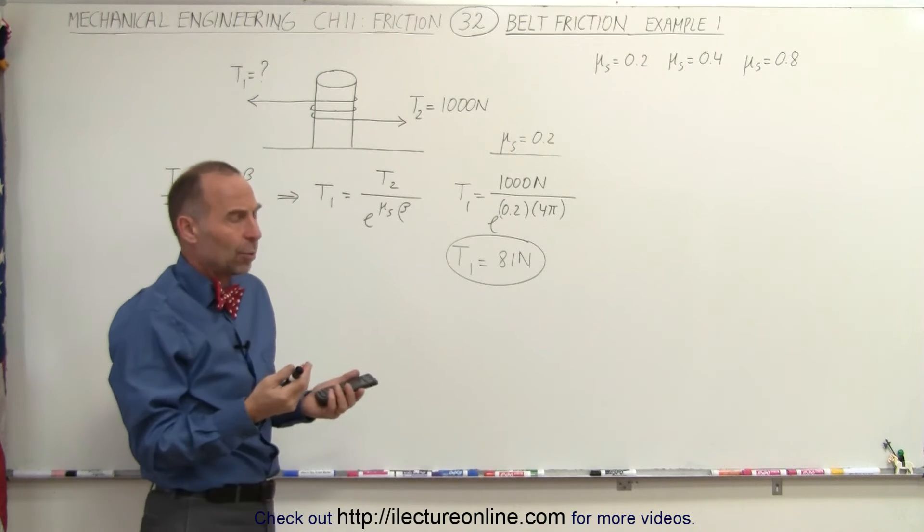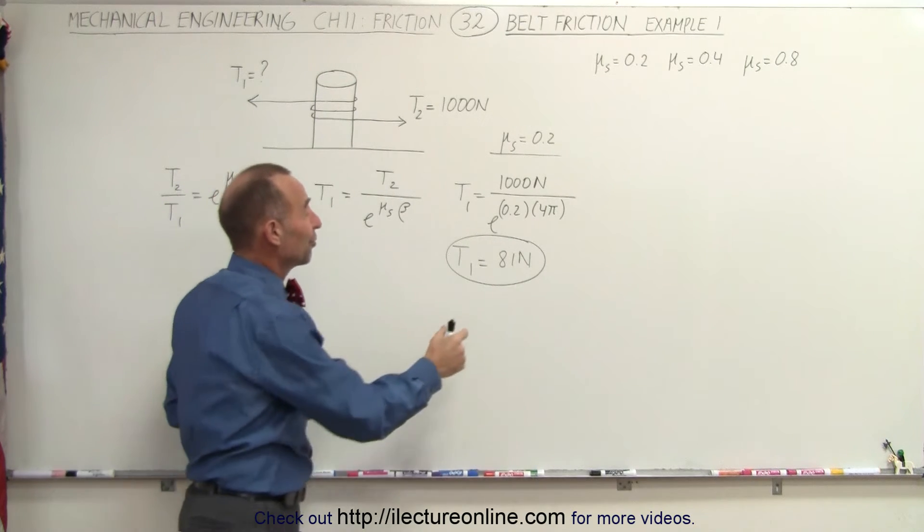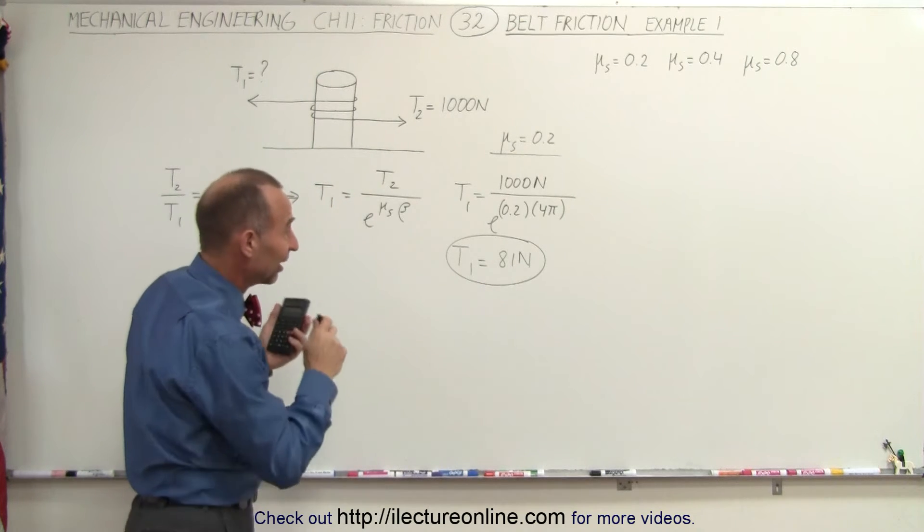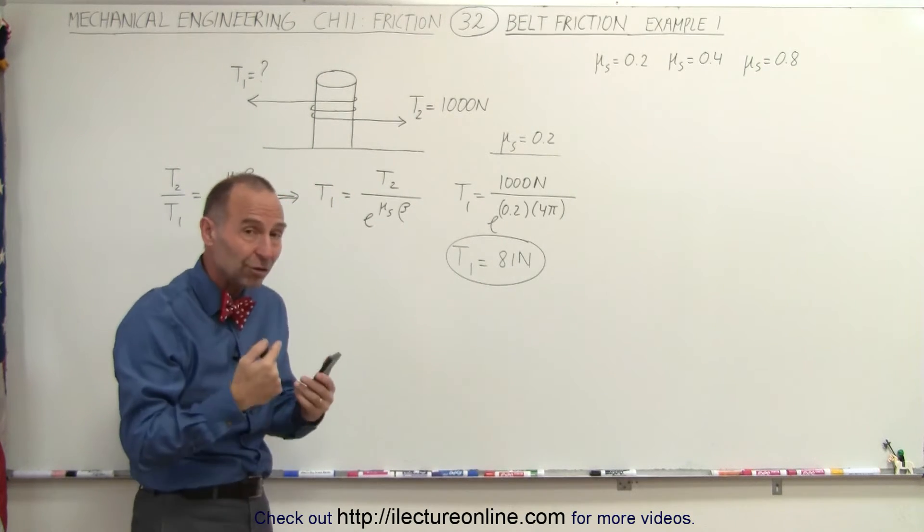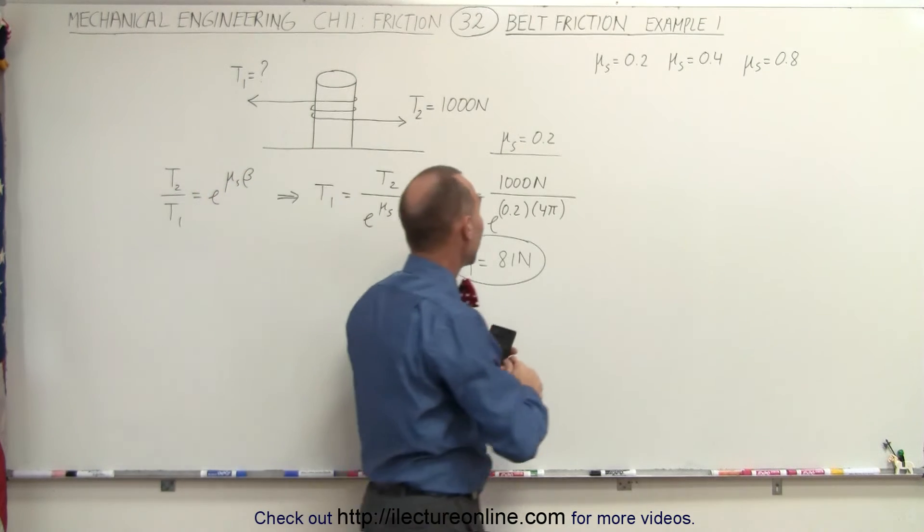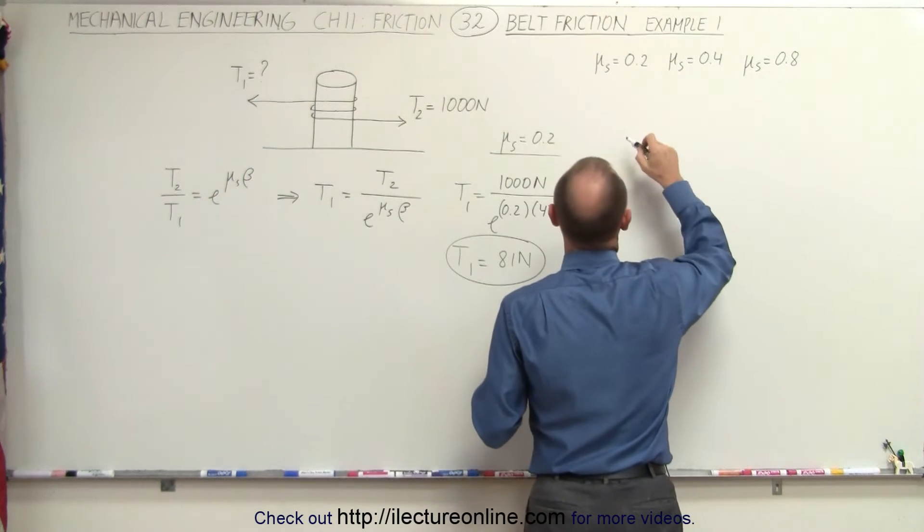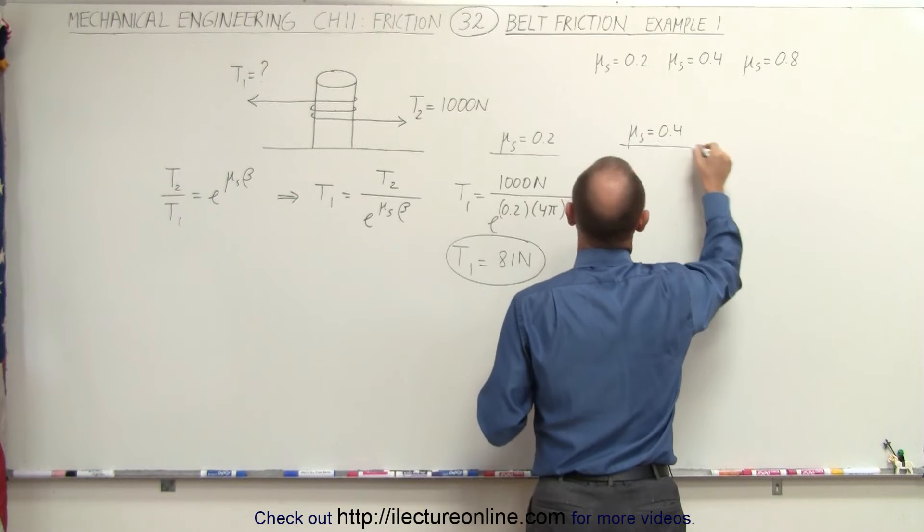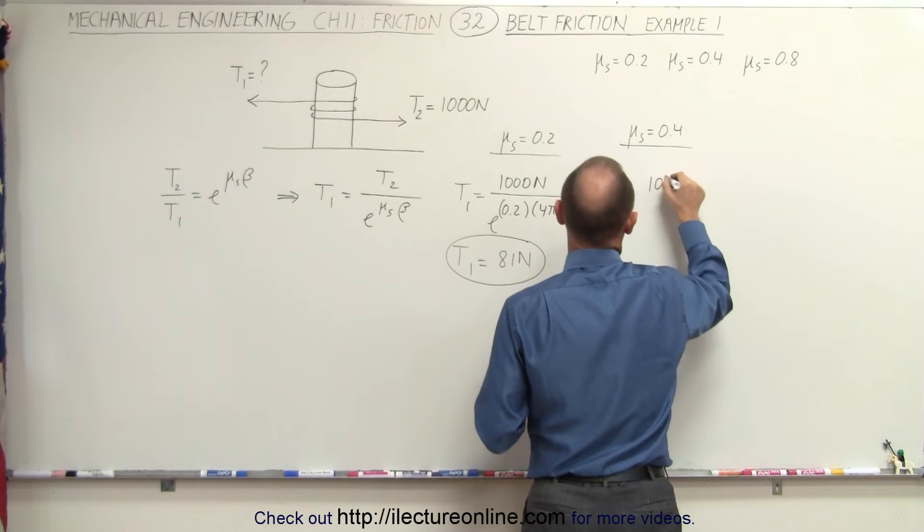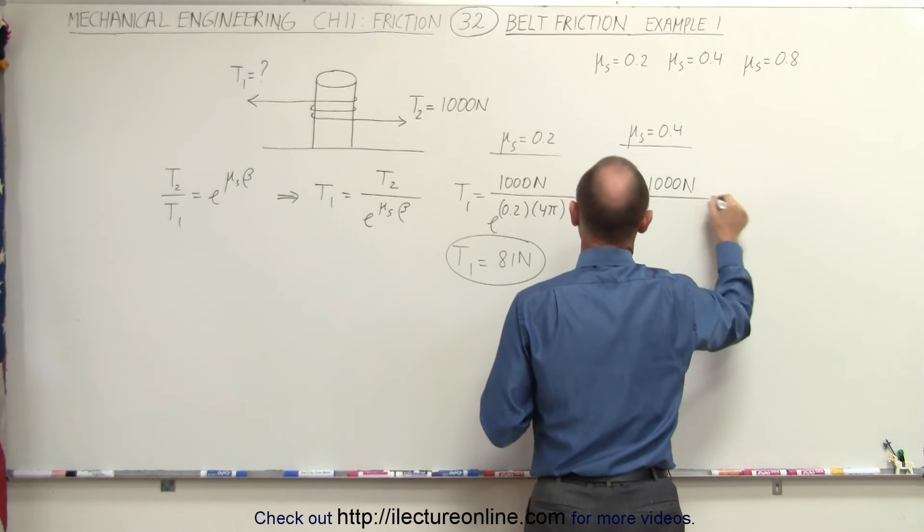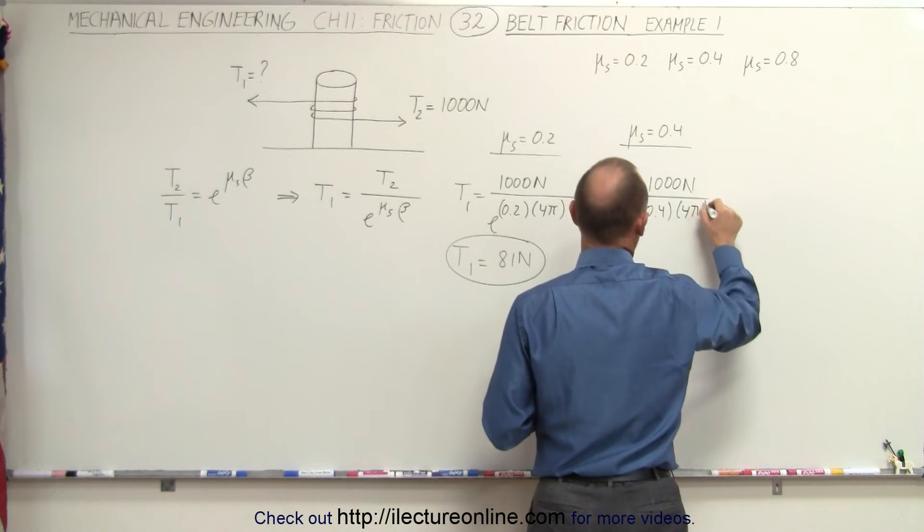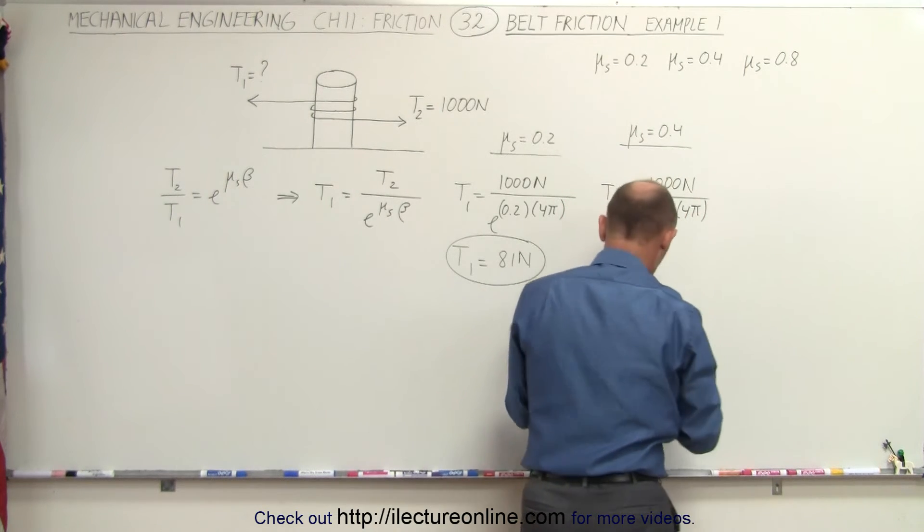And initially you might think well if it's double the coefficient of friction you expect maybe half the tension but that's not the case. This is kind of a unique situation. It's not a linear function and so let's see what happens. We get μₛ now equal to 0.4. So we get T1 is equal to 1,000 newtons divided by e to the 0.4 times 4π. And let's see what happens now.